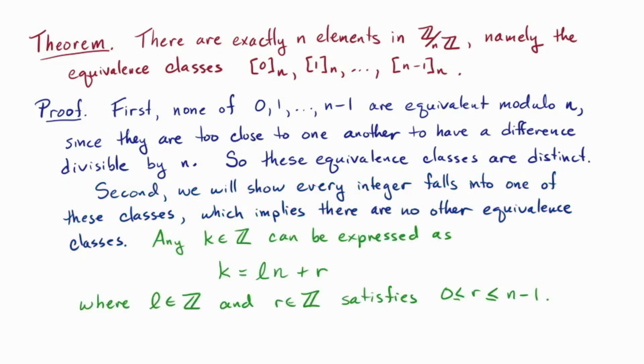Now we use a familiar fact. Any k in the integers can be expressed as k equals ln plus r, where l is an integer and r is an integer in the range from 0 to n minus 1. This fact is known as the division algorithm, and it's a topic for another video. In fact, but it's very familiar to you, so we'll use it here without further discussion. It's simply the statement that when you divide k by n, you have a remainder somewhere in the range between 0 and n minus 1. But if k can be written that way, then k and r are separated by a multiple of n. So that means k is in the equivalence class of r. With this we've shown these equivalence classes are distinct, and there are no others, and so we have a total of n elements, and we're done.